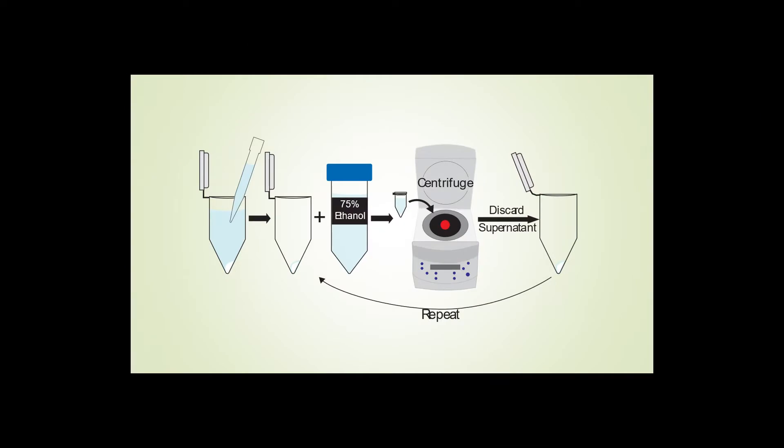Once the RNA has formed a pellet, we can remove the supernatant, rinse with ethanol, and centrifuge again.